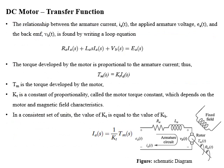To find the relation between armature current, applied voltage, and back EMF, we replace passive electrical components with their impedances in the Laplace domain and apply KVL. The resulting equation includes: armature resistance Ra multiplied by armature current, impedance from armature inductance, and back EMF voltage, all equal to the applied source voltage. The torque developed by the motor is directly proportional to armature current, with the proportionality constant being the motor torque constant Kt, which depends on the motor and magnetic field characteristics. In SI units, the motor torque constant and back EMF constant are equal.